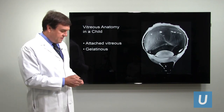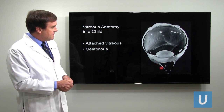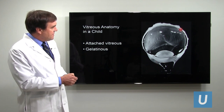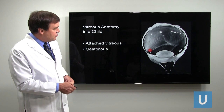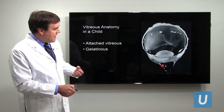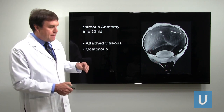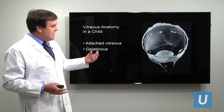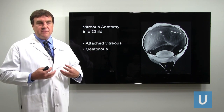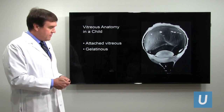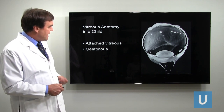This is vitreous in a child — a pathologic specimen. You can see it's attached everywhere. There's a glistening on the surface of the retina, and it looks like it's dripping out of the eye but it's not moving further. This is not fluid running out; it stays like this because it's actually a semi-liquid structure, and this is what it looks like when you take a picture of it — somewhat gelatinous.